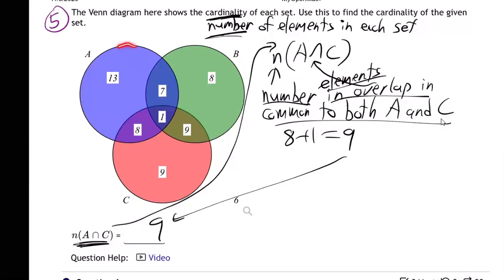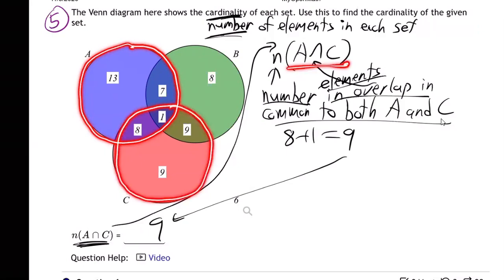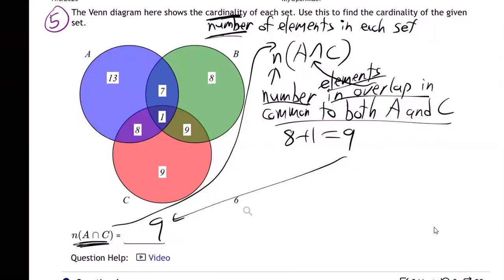if you take A, sometimes it helps just to kind of highlight the specific sets they're saying. A unite - I mean sorry, A overlap C. So if I show A and C, kind of highlight them, forget about B, just highlight A and C. The overlap is these two right here, right? That's the overlapping region of A and C. So that's nine - eight and one - nine. Perfect.